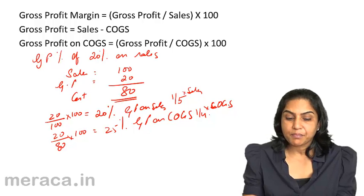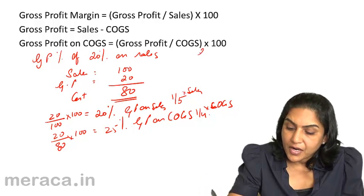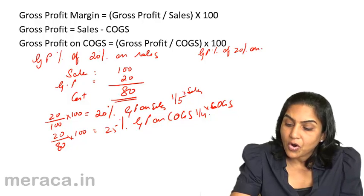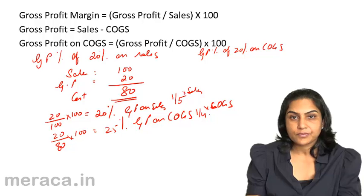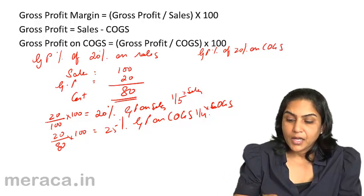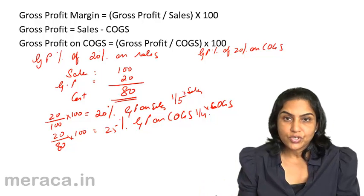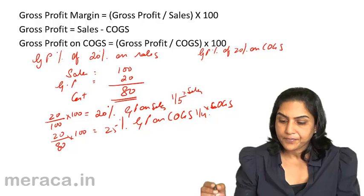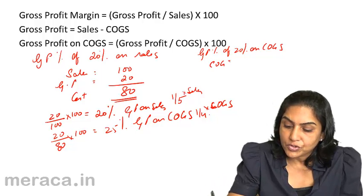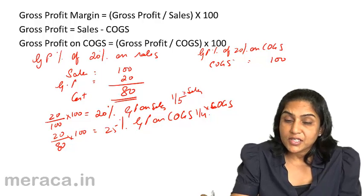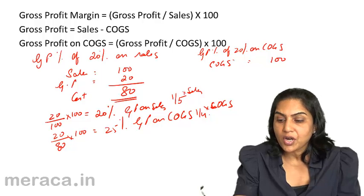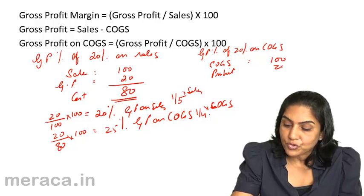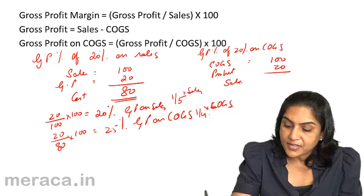Let us take another example. Suppose we have a gross profit percent of 20% on cost of goods sold. This means we assume cost of goods sold to be 100, so that profit is 20. Since gross profit is 20% on cost of goods sold, cost of goods sold is 100, profit is therefore 20, which means sales is 120.